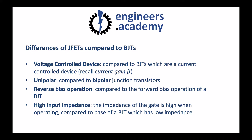The last difference worth pointing out is that the J-FET has a very high input impedance. The impedance of the gate is high when operating, compared to the base of a bipolar junction transistor, which has a very low impedance. The base to emitter section of a bipolar junction transistor was a forward biased P-N junction, and so it has a very low impedance and allows very high current to flow potentially. Bipolar junction transistors are therefore very easily damaged by high currents, and only a very small current should be applied to the base.